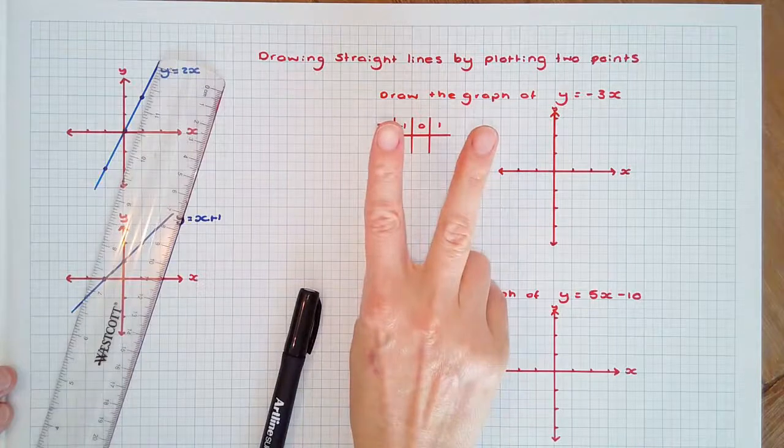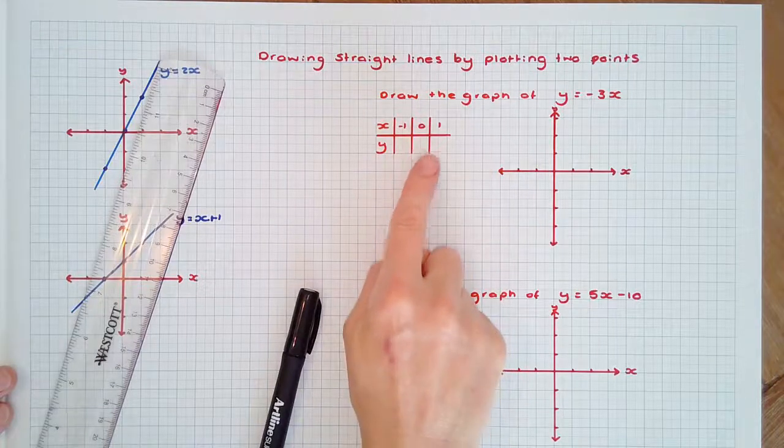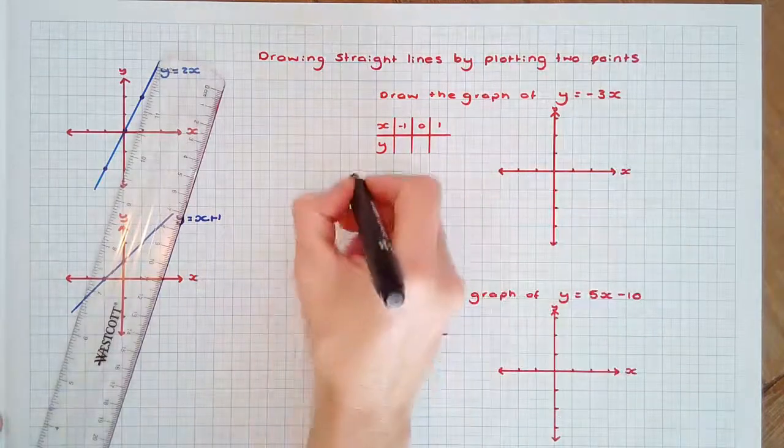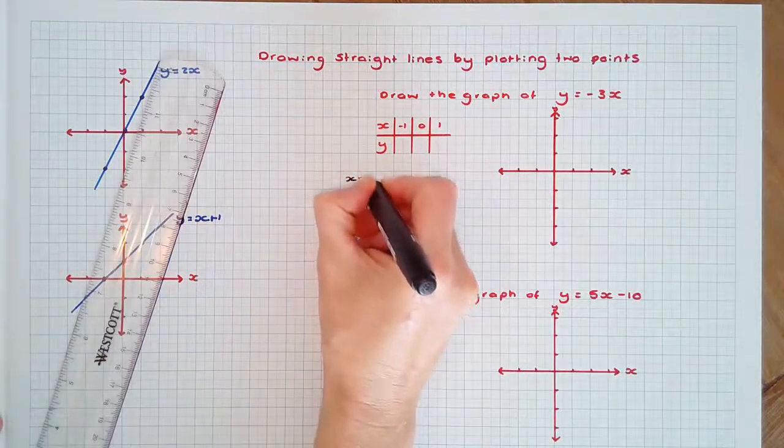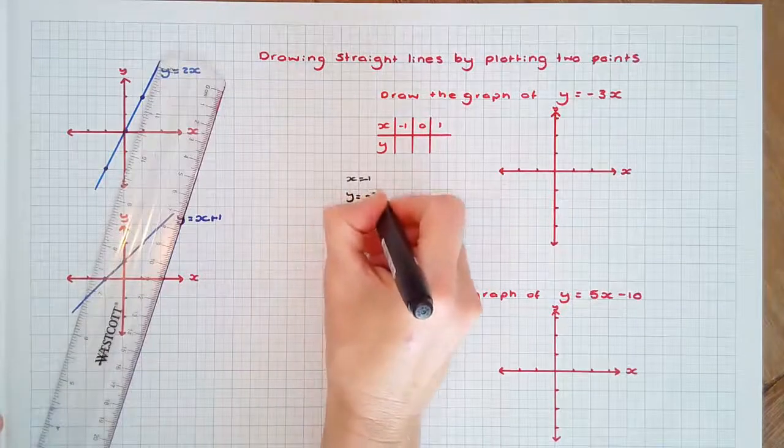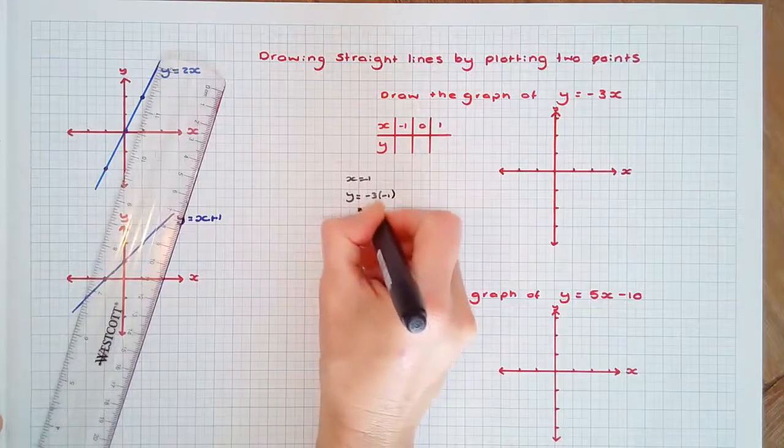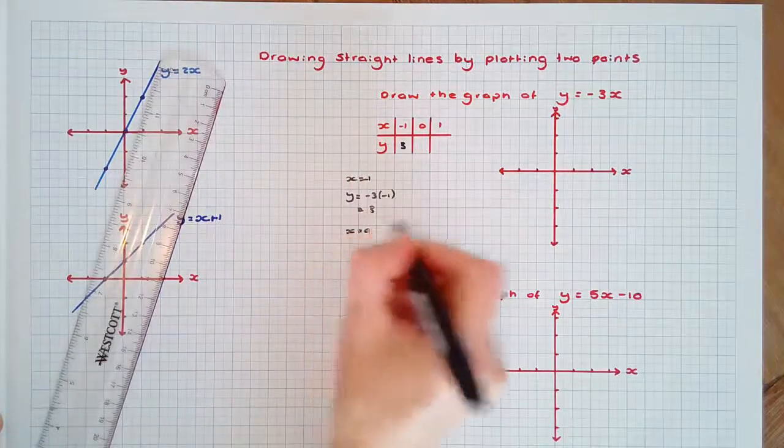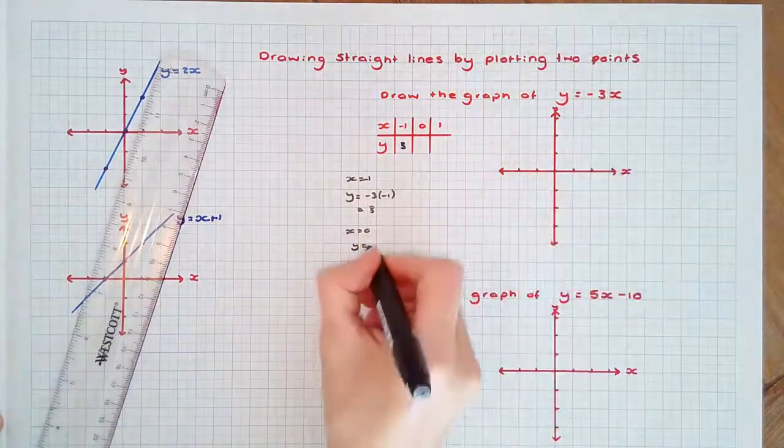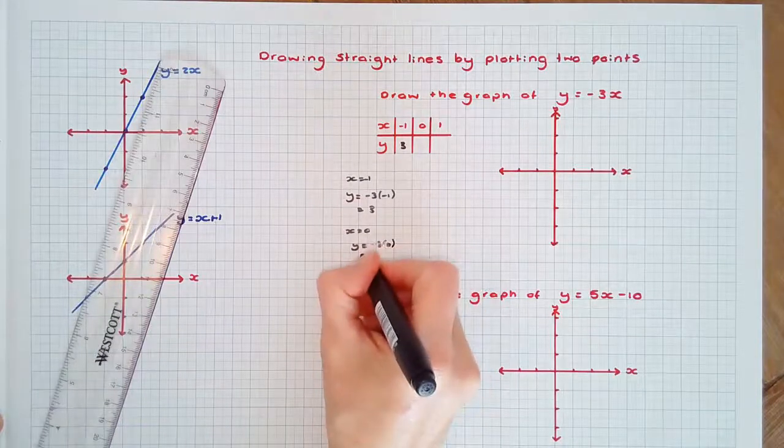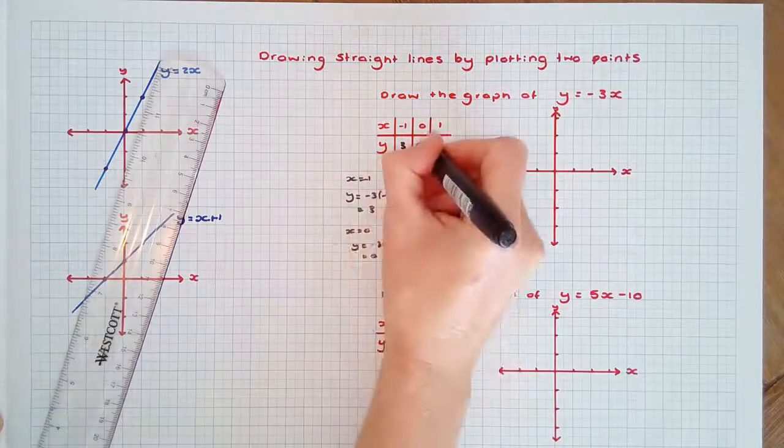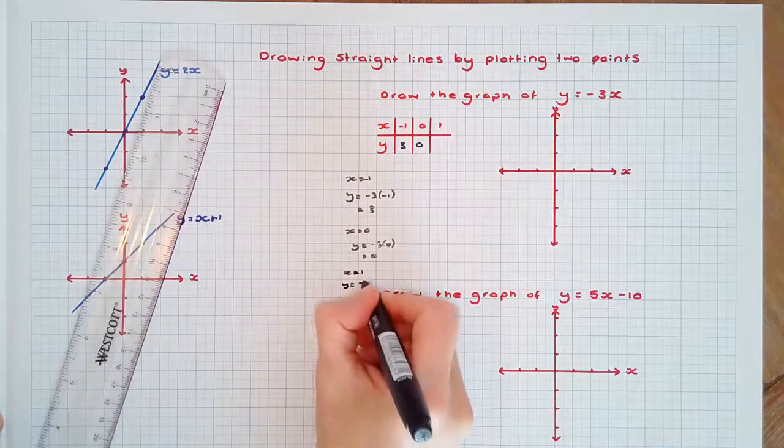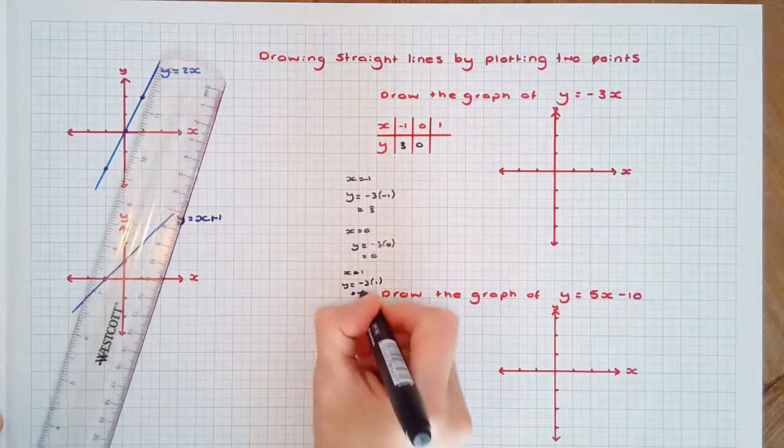We only need two points but a third point is calculated as a check. When x equals negative 1, y equals negative 3 times negative 1, which equals 3. When x equals 0, y equals negative 3 times 0, which is 0. And when x equals 1, y equals negative 3 times 1, which is negative 3.